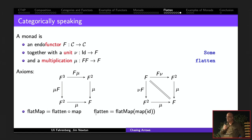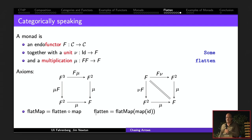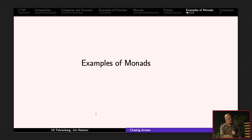flatMap and flatten can each be expressed in terms of the other. Flatten is the flatMap of the identity function; flatMap is flatten after map. They are two sides of the same coin.